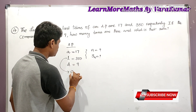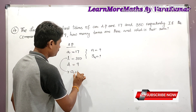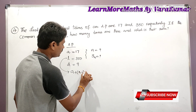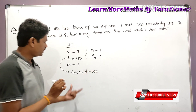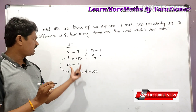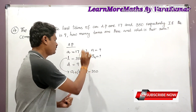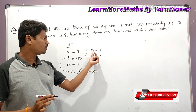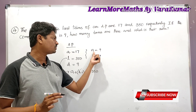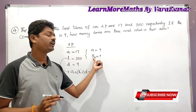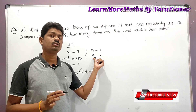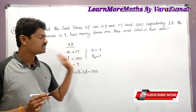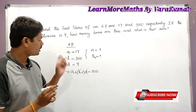To find n, we use the formula for the last term: l = a + (n−1)×d = 350. By substituting the values of a and d, we can get the value of n. Once we know n, we find the sum using the formula Sn = n/2 × (a + l).